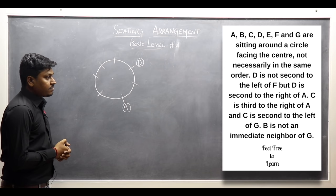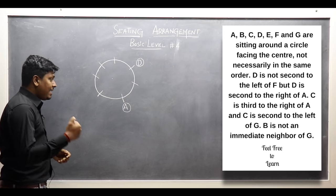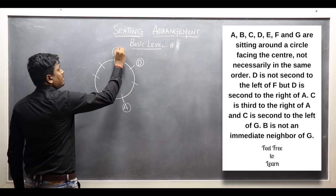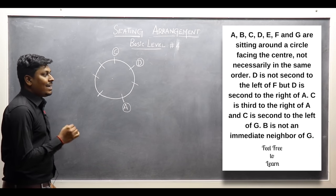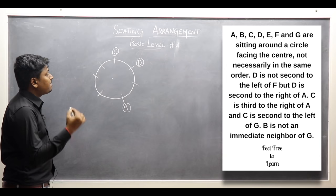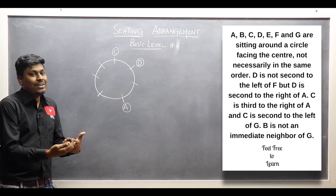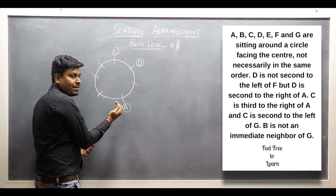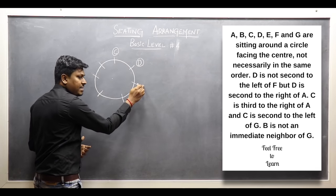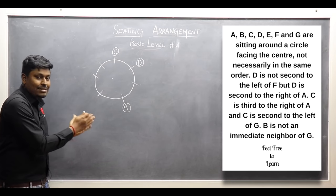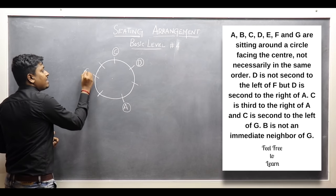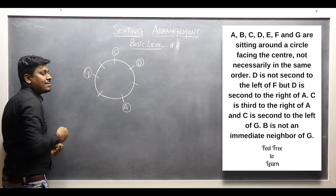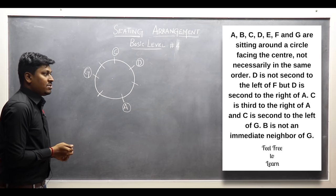Next point: C is third to right of A — so on A's right hand side at the third place, C is sitting. One, two, and three — so C is fixed there. Also, C is second to left of G — meaning on G's left hand side at the second place, C is sitting. If I fix G here, then G's left hand side will be this side, so at the second place on G's left, C is sitting.